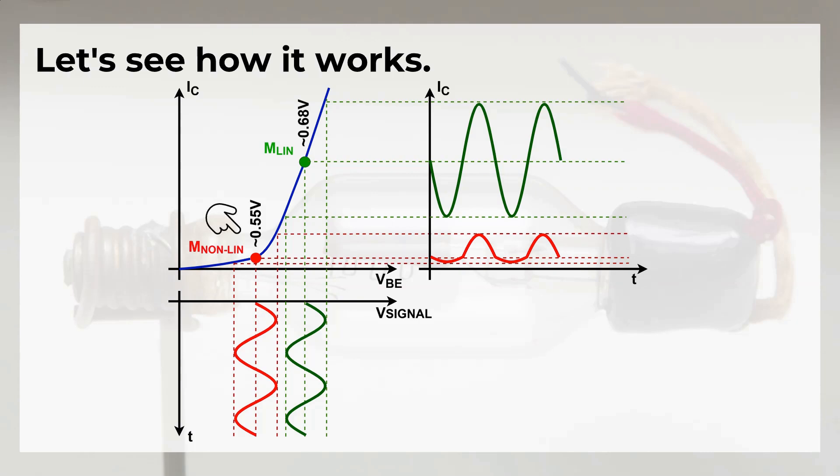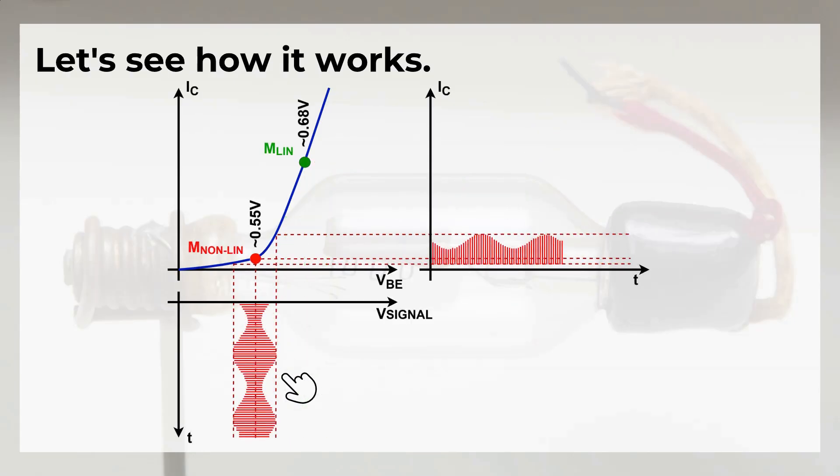But we want to find another operating mode. If we bias the transistor so that the base-emitter voltage is around the knee region, we get a diode-like behavior. And finally we can see what happens when an AM signal is applied to the transistor around this knee region.